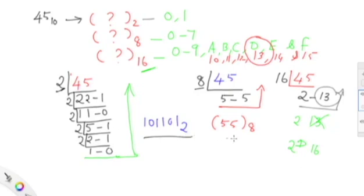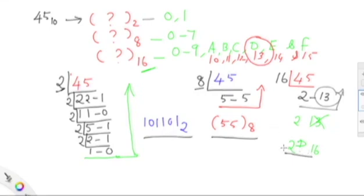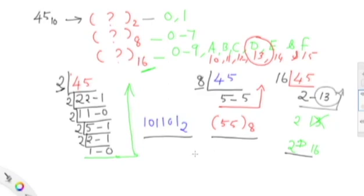To summarize: 1011101 base 2 is the binary value for 45, 55 base 8 is the octal value, and 2D base 16 is the hexadecimal value for 45. This is how conversion takes place from the decimal number to binary, octal, and hexadecimal. In the next video series, we will try to convert the machine number systems — octal, hex, and binary — back to the decimal system.